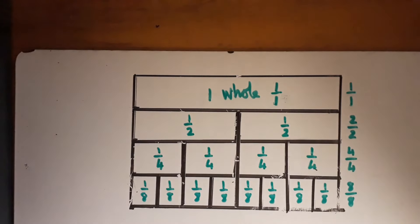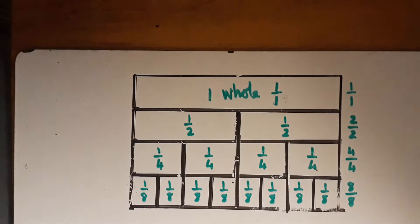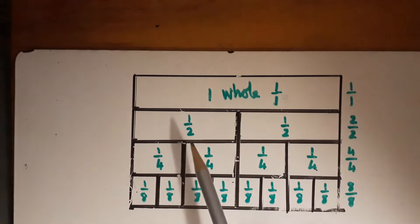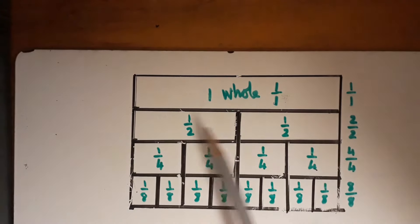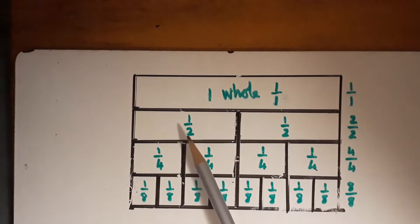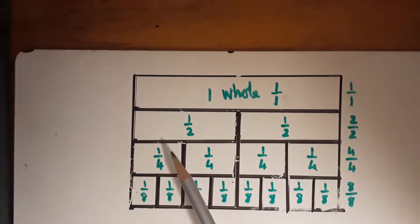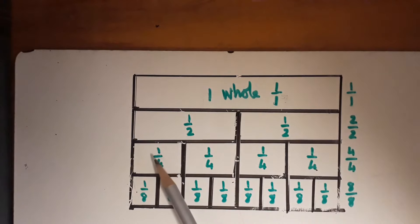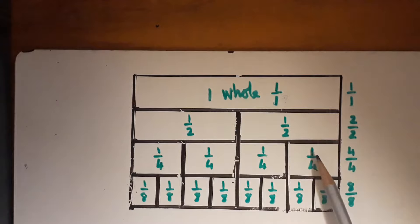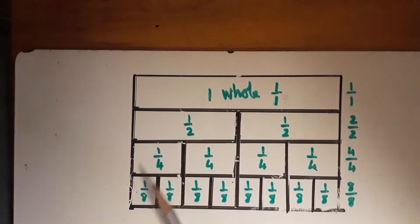I've drawn the fraction wall for the halves family. This part of the wall is divided into two equal parts. Each half is then divided in half again, which gives us four equal parts. And each of those quarters is then divided in half again, which gives us eight equal parts.